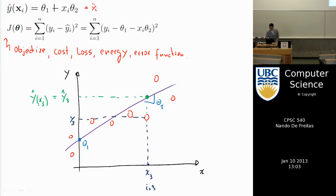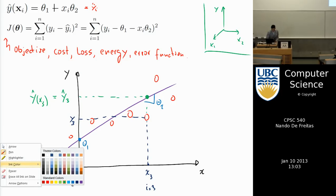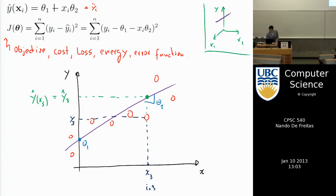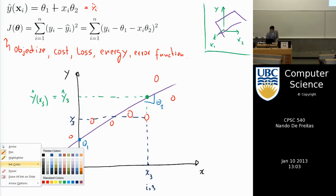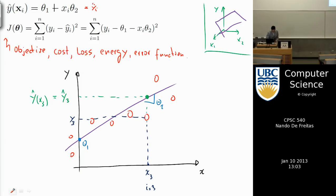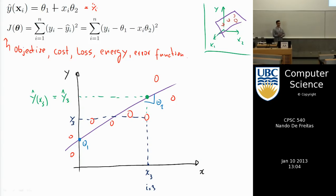In 2D input space you have two x's, x_1 and x_2, and you still have y — and you'd fit a plane to the points. As you go to higher dimensions you can no longer draw it, but the equation is still called the equation of a plane, and in high dimensions we call it a hyperplane.